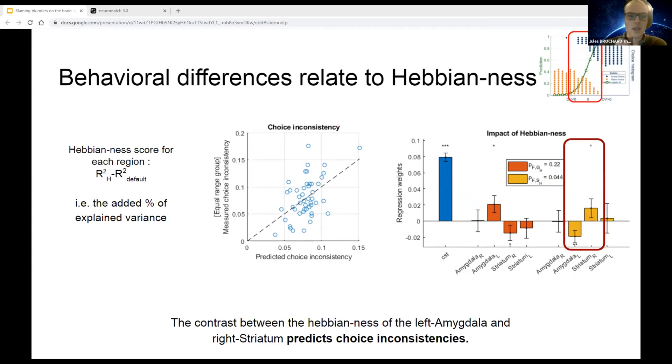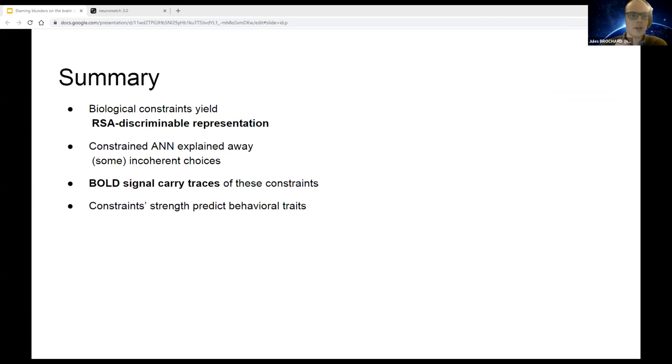To wrap up, in this work I've shown that biological constraints can be discriminated by the means of representational similarity analysis. Such constrained artificial networks explain away some inferior incoherent choices without using the idea of noise or error.